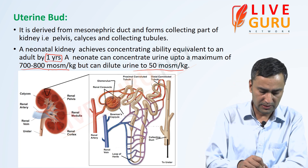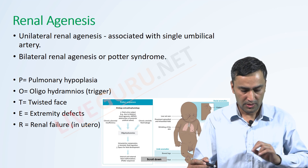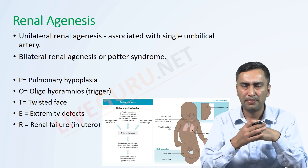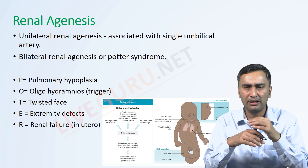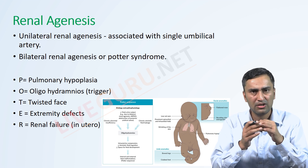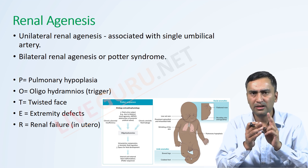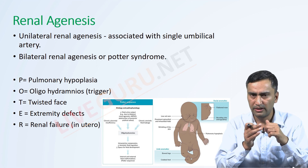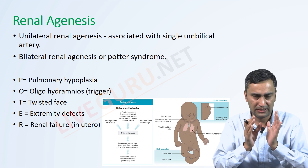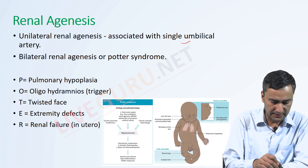This is a fact you should memorize, as it may be asked in the examination. Regarding renal agenesis, this is an important developmental topic. Immediately after delivering the baby, after clamping and cutting the cord, you should examine the umbilical cord. In the umbilical cord there are two umbilical arteries and one umbilical vein. If you find only one umbilical artery, you should suspect renal agenesis.